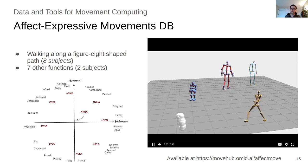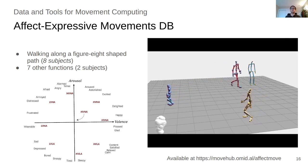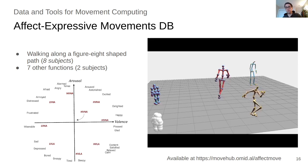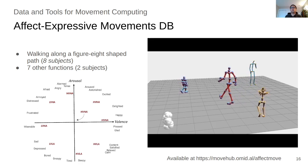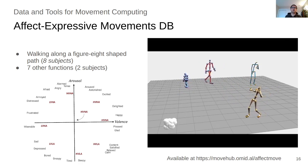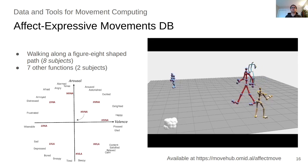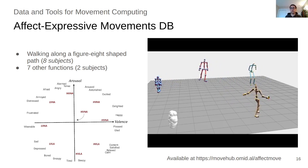The first dataset that we present is the affect-expressive movements database. The main purpose of this dataset is to collect movements with expressive variations along a two-dimensional space of valence and arousal. We have walking movements along a figure-eight shape path with 48 subjects, and we have seven other movement functions, such as sitting, from two subjects.